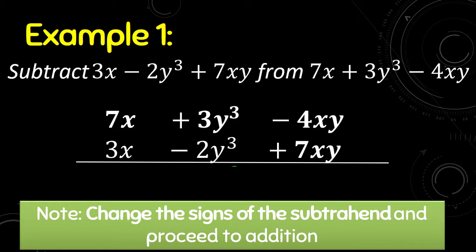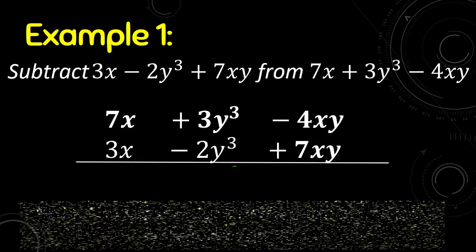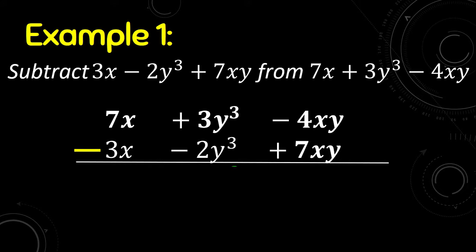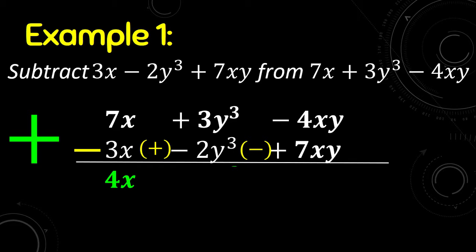We have to change the signs of the subtrahend and proceed to addition. So positive 3x becomes negative, negative 2y³ becomes positive, and 7xy becomes negative. Then we proceed to addition: 7 plus negative 3 is positive 4x, positive 3y³ plus positive 2y³ is positive 5y³, and negative 4xy plus negative 7xy is negative 11xy. That is the difference of the given polynomials.